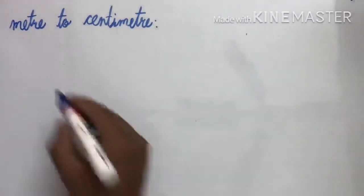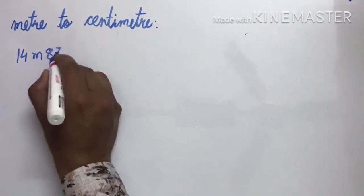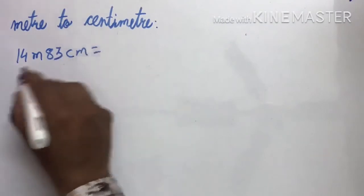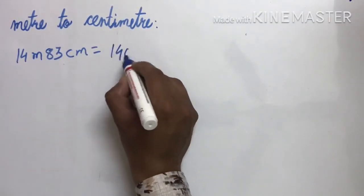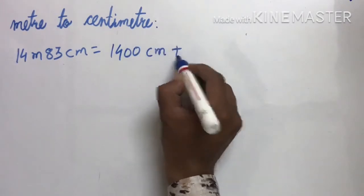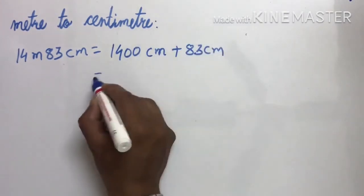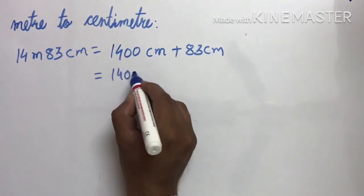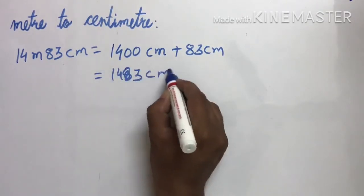अभी अगर हो 14 meter 83 cm, तो 14 meter कितने cm होगा? 1,400 cm plus 83 cm, तो answer है 1,483 cm.